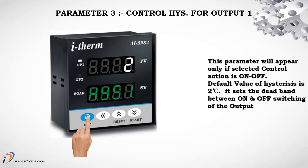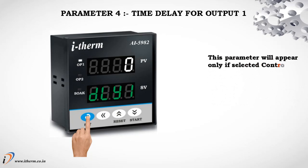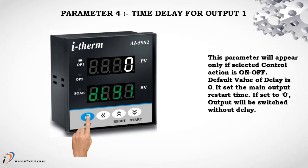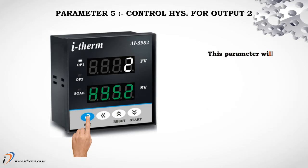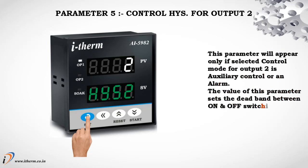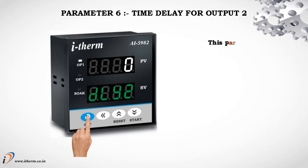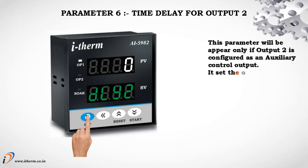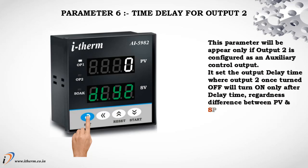It sets the dead band between on and off switching of the output. Parameter 4: Time Delay for output 1. This parameter will appear only if the selected control action is on/off. Default delay value is 0; it sets the main output restart time. If set to 0, output will switch without delay. Parameter 5: Control Hysteresis for output 2. This parameter will appear only if the selected control mode for output 2 is auxiliary control or alarm. It sets the dead band between on and off switching of output load. Parameter 6: Time Delay for output 2. This parameter appears only if output 2 is configured as auxiliary control. It sets the output delay time — output 2, once turned off, will turn on only after the delay time, regardless of the difference between process value and set point 2. Delay will also be considered at every power on.